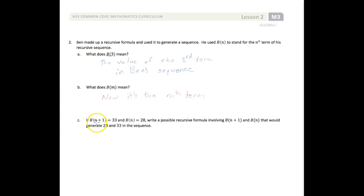If the (n+1) term of Ben's sequence is 33 and the n term is 28, write a possible recursive formula involving b(n+1) and b(n) that would generate 28 and 33. If we look at this, we have 33 and 28. It doesn't take much to conclude that if I add 5, I can get a true statement. So I need to add 5.